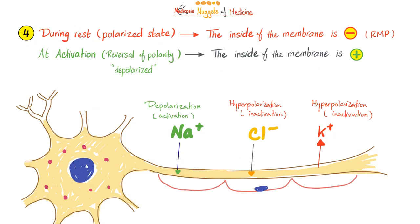Nugget four: during rest, or resting membrane potential, you have a polarized state — the inside is more negative compared to the outside. This is relative, not absolute; the inside has both negative and positive charges, just more negative than positive relative to the outside. During depolarization, the inside becomes more positive and outside more negative. Sodium influx makes you more active; chloride influx or potassium efflux makes you more negative — leading to repolarization or even hyperpolarization.